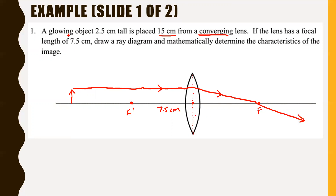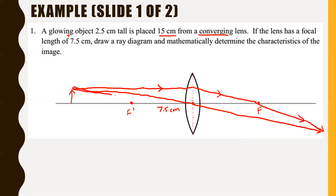The second ray goes towards the optical center and continues off undisturbed in a straight line. The third ray needs to go through the secondary focal point, then refract so that it becomes parallel to the principal axis. Where these three lines intersect is where the image forms — it's somewhere around the other side of the lens at roughly the same distance as the object.